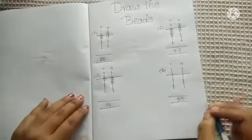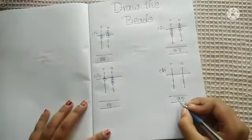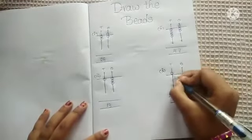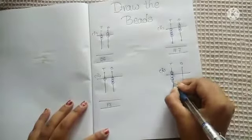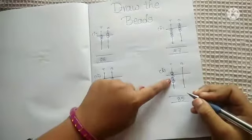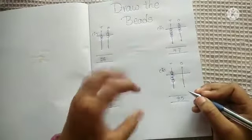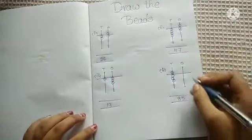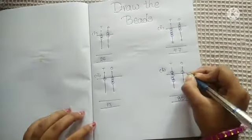Now for 85, in the tens place we have to draw eight beads — five, six, seven, eight — meaning one bead on the upper deck and three beads on the lower deck. Next, in the ones place we have to draw five beads. We already know that five is represented on the upper deck.